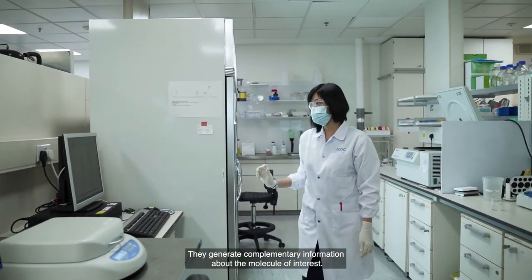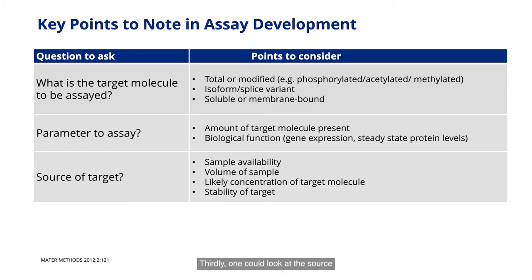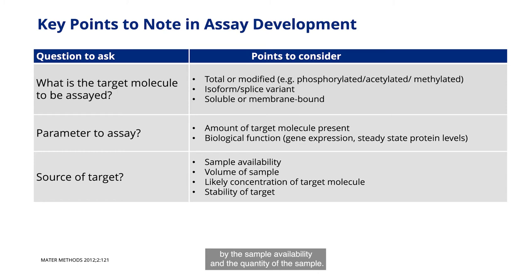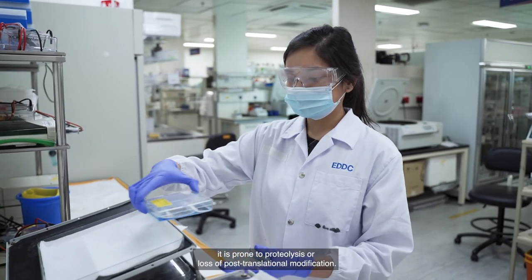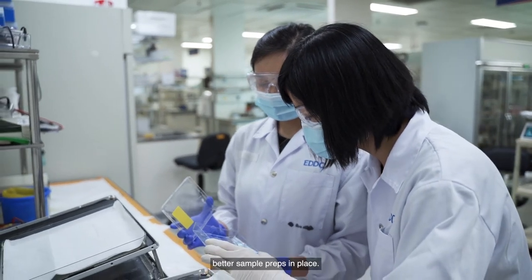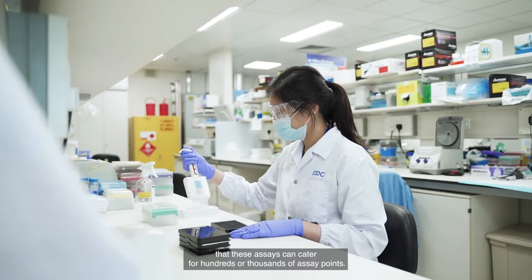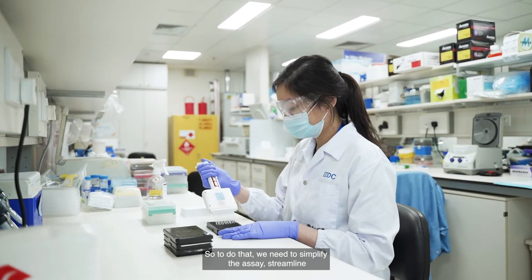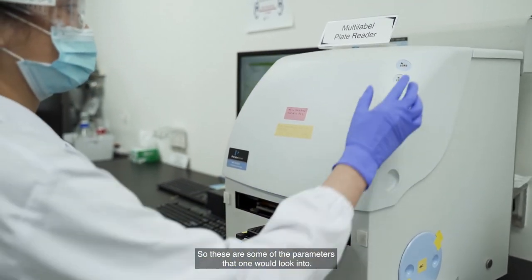These generate complementary information about the molecule of interest. Thirdly, one could look at the source of the target, because the source can be determined by sample availability and quantity. There are instances where when you purify the target molecule, it is prone to proteolysis or loss of post-translational modification — so in this case we have to ensure we have better sample preps in place. Finally, when running assays, we need to ensure that they can cater for hundreds or thousands of assay points, so we need to simplify, streamline, and automate the process.